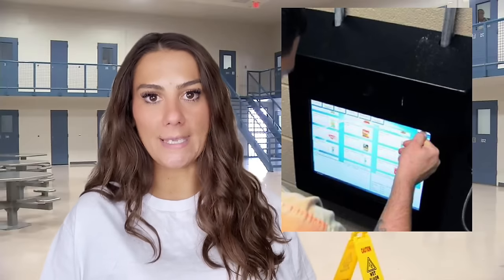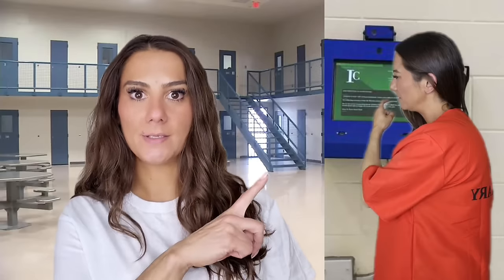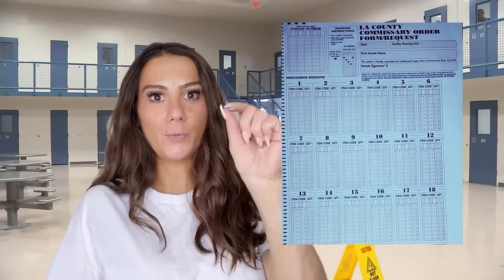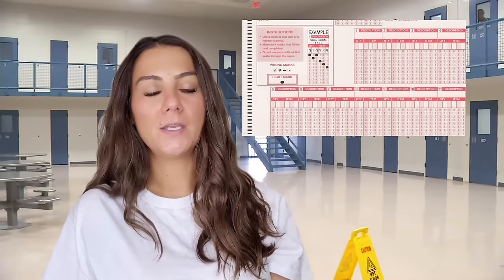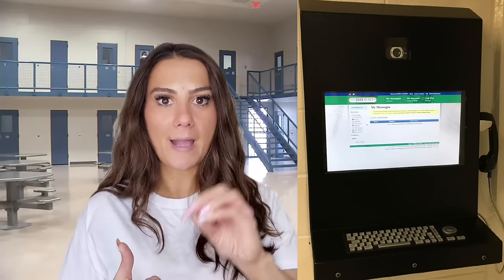How you order commissary: it's usually a kiosk inside the jail pod. Years ago they had pieces of paper you'd fill out — even bubble sheets where you fill in what you wanted and how many. But now, from what I've seen, most jails have a kiosk. It'll show your name, how much money you have, the prices of everything, and as you're buying, it'll show what you have left.